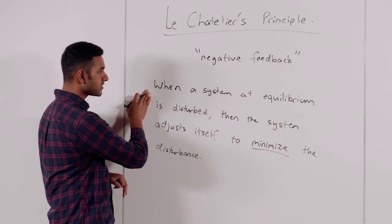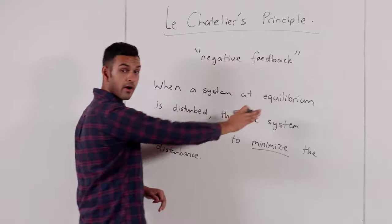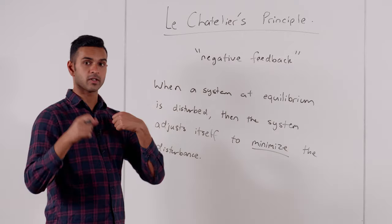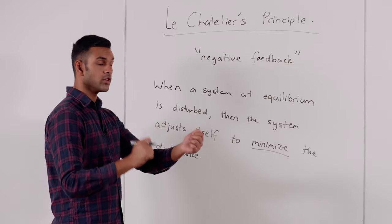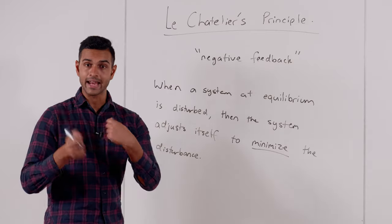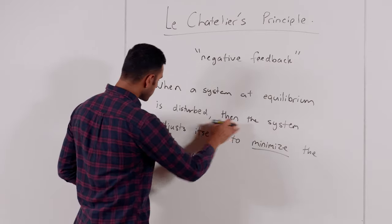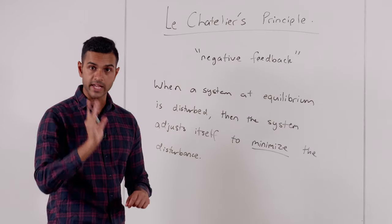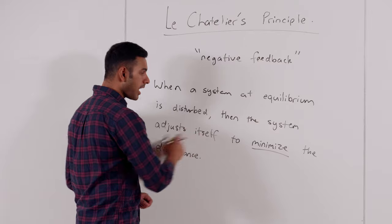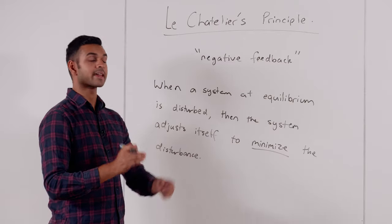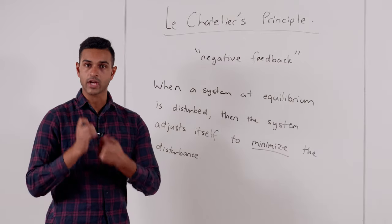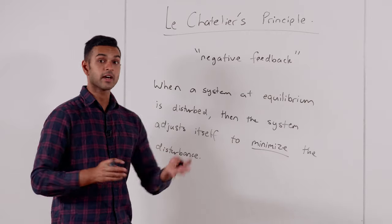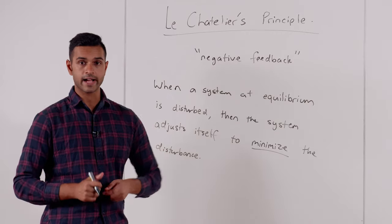Once again: when a system at equilibrium is disturbed — you open the system and change the content, or change the amount of energy — then the system adjusts itself. In other words, it will change the position of equilibrium to minimize the disturbance, to counteract the change you've done to the system. That's the definition. Let's now look at it in more detail in a chemical reaction.